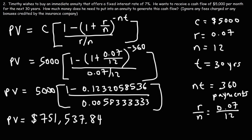So if Timothy wishes to generate a cash flow of $5,000 per month for retirement for the next 30 years, he needs to roll over $751,537.84 from his IRA into an annuity, and that insurance company will pay him $5,000 per month for the next 30 years.